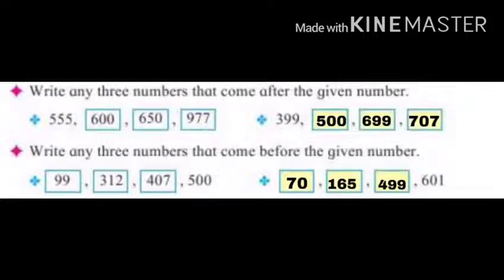Then the next question is, write any 3 numbers that come before the given number. Now here the question is 500, and the answers are 99, 312, 407. Same way here also, you can take any number, whichever you like. But it should be before number, not the after numbers.